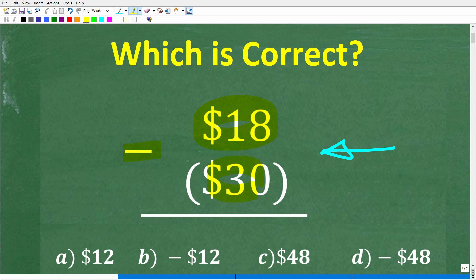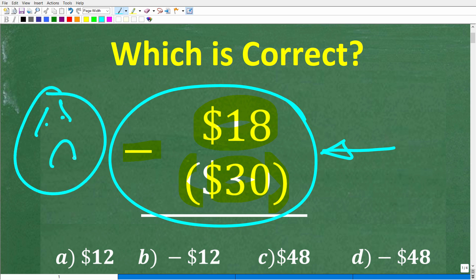We have $18 minus $30 in parentheses. Now, actually, I am redoing this problem. I did a video the other day on this actual problem, and I did not like my answer. Okay, because a lot of people were confused with my answer, and I missed a major thing here.